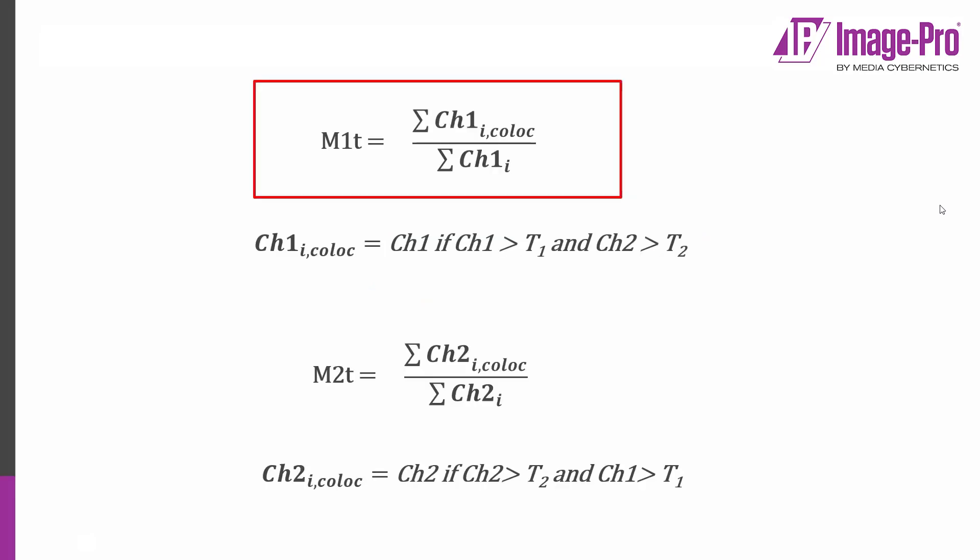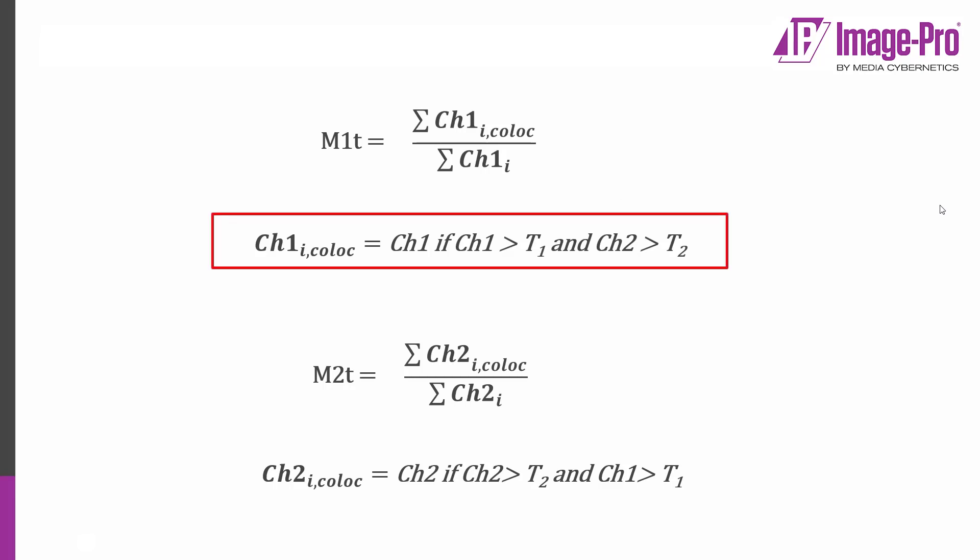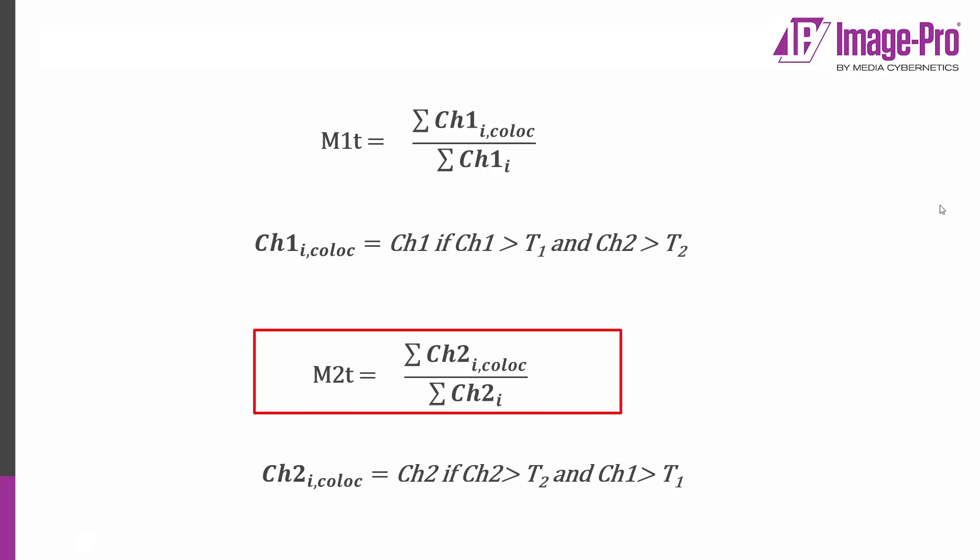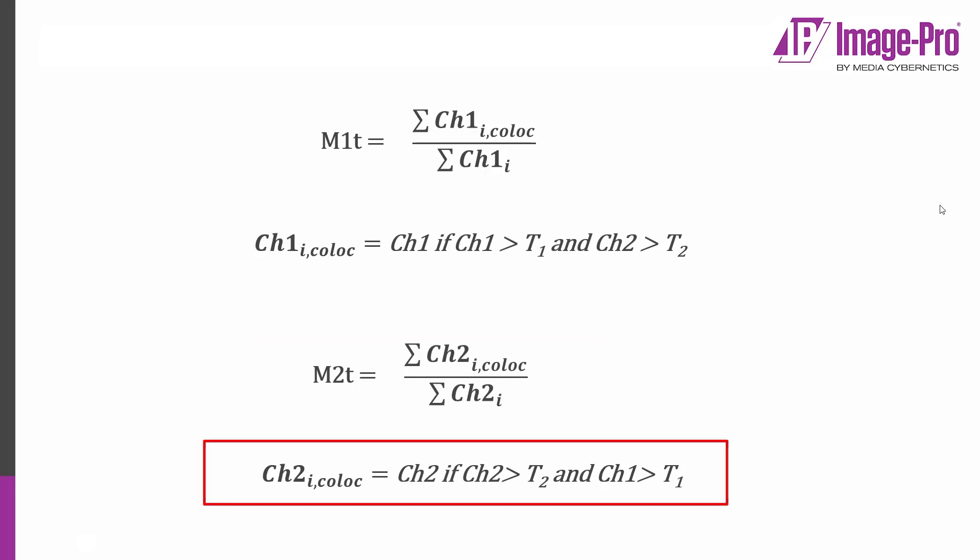We're also going to use M1t — the total co-localized intensities of channel one over the total intensities of channel one. We consider intensities to be co-localized if channel one is over its threshold and channel two is over its threshold in that pixel. We also have M2t — the total co-localized intensities of channel two over the total intensities of channel two, co-localized if both channels are over their thresholds. So we're going to do our analysis with just these three coefficients: Pearson's correlation coefficient, M1t, and M2t.